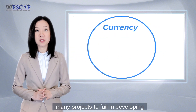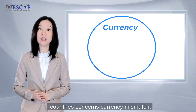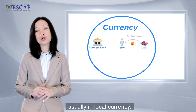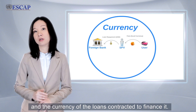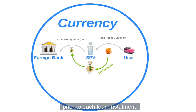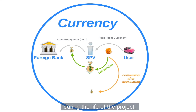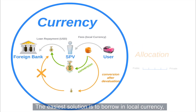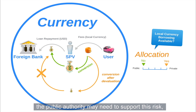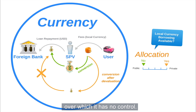Another financial risk that has caused many projects to fail in developing countries concerns currency mismatch. Such risk exists when there is a disparity between project revenue, usually in local currency, and the currency of the loans contracted to finance it. In this case, project revenue must be converted prior to each loan installment. If the local currency is devalued during the life of the project, revenue may not be sufficient to cover loan repayments. The easiest solution is to borrow in local currency, and the private partner should bear this risk if local currency loans are available. If they are not, the public authority may need to support this risk, as the private partner may not be prepared to accept a risk over which it has no control.